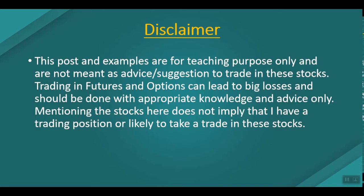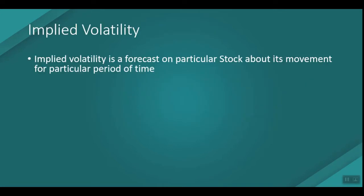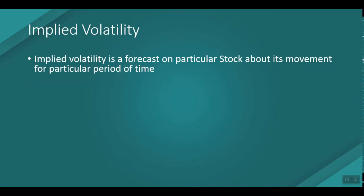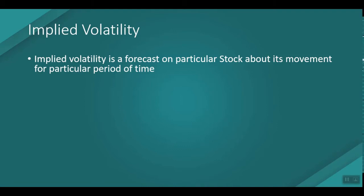Implied Volatility (IV) is a forecast about a particular stock's movement for a particular period of time. IV tells us the range that a particular stock will move in a given time period. For example, if a stock has an IV of 2%, then the expected range for one-day movement is 2% — either up 2% or down 2%. That is the main concept of implied volatility.